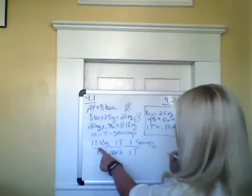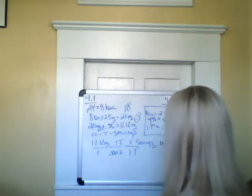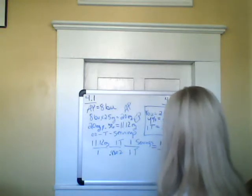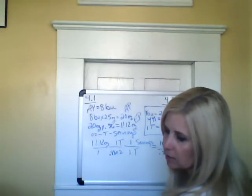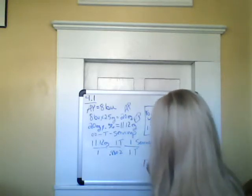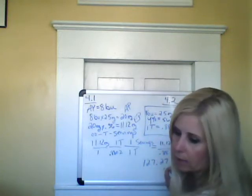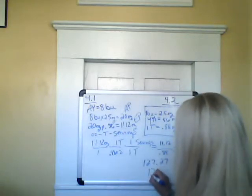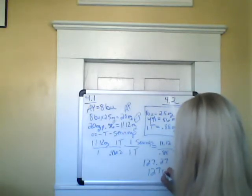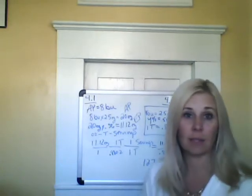Okay so if we multiply across the top 11.12 times one times one gives us 11.12 divided by 0.88 is going to give us 127.27. Okay so and this says round your answer to a whole number so this would round to 127 portions or servings of this basil.